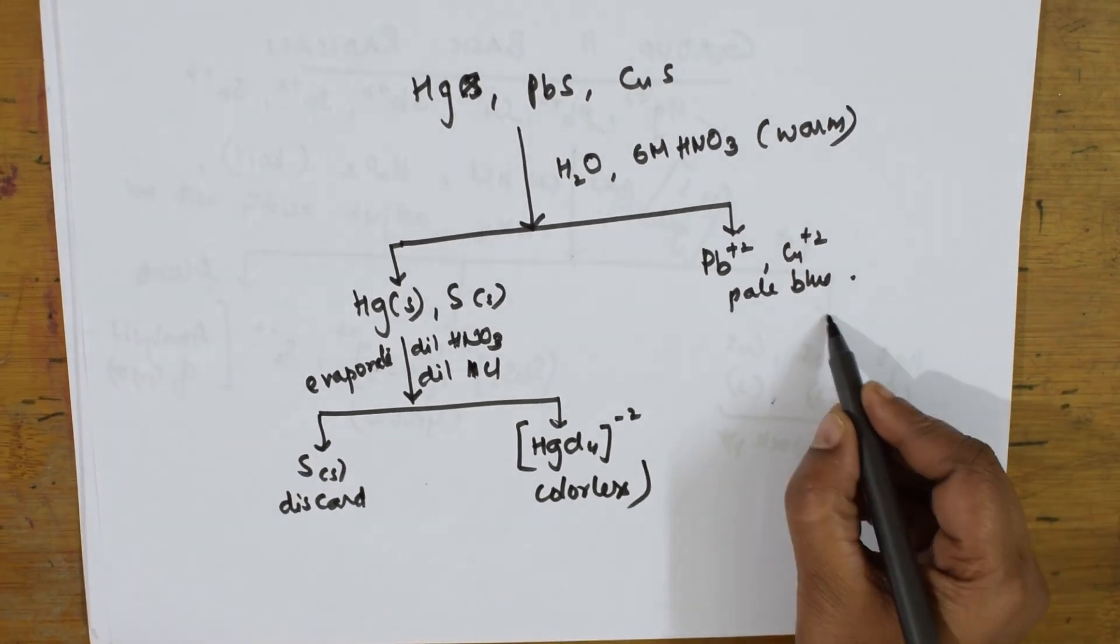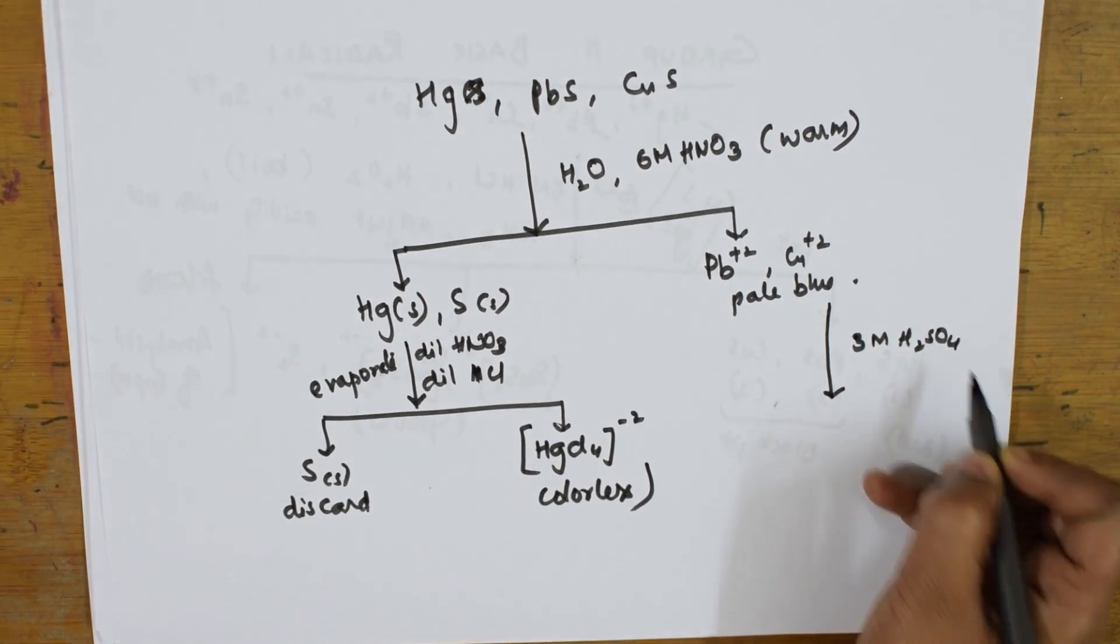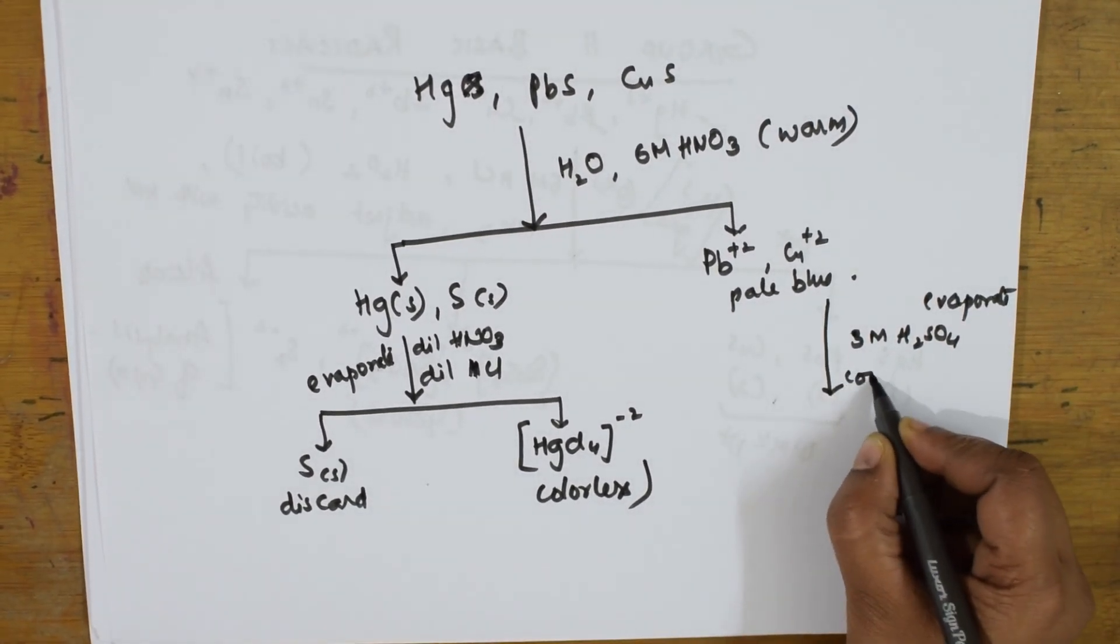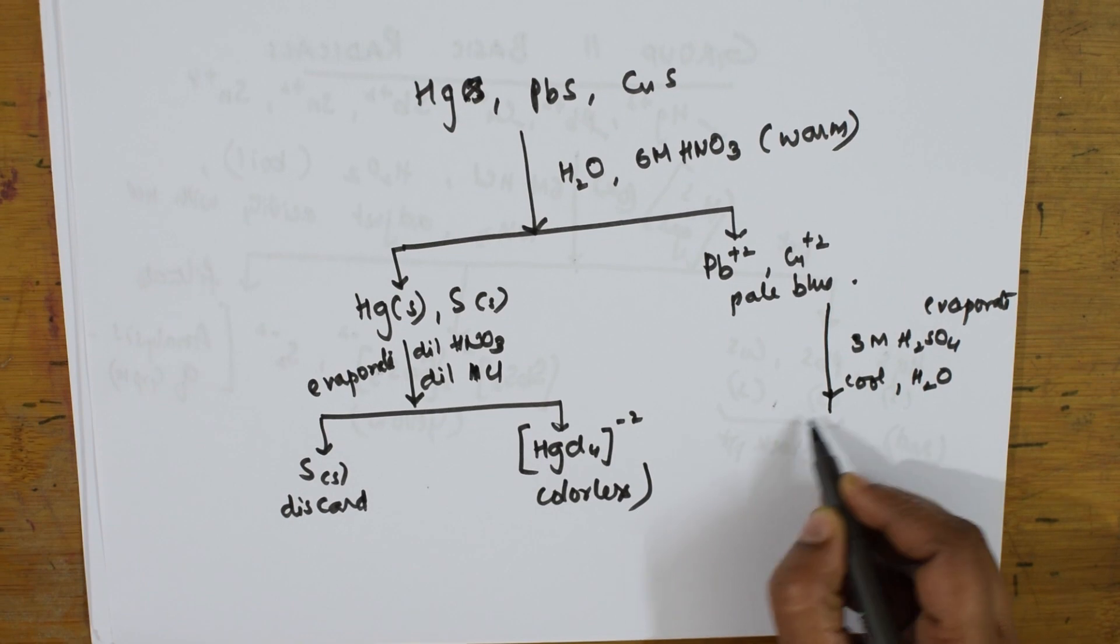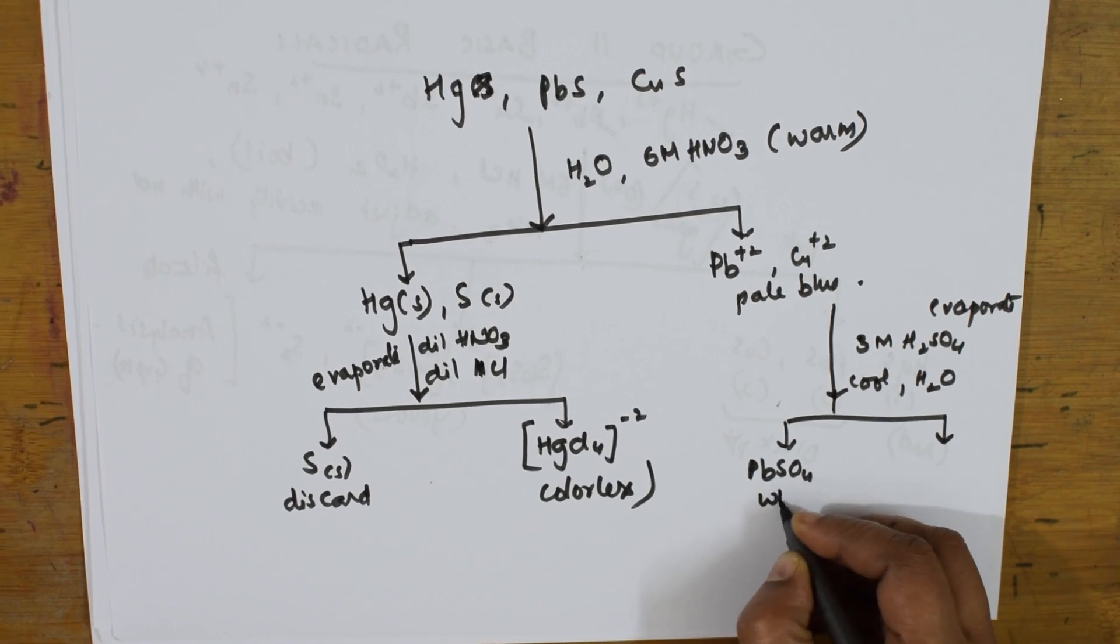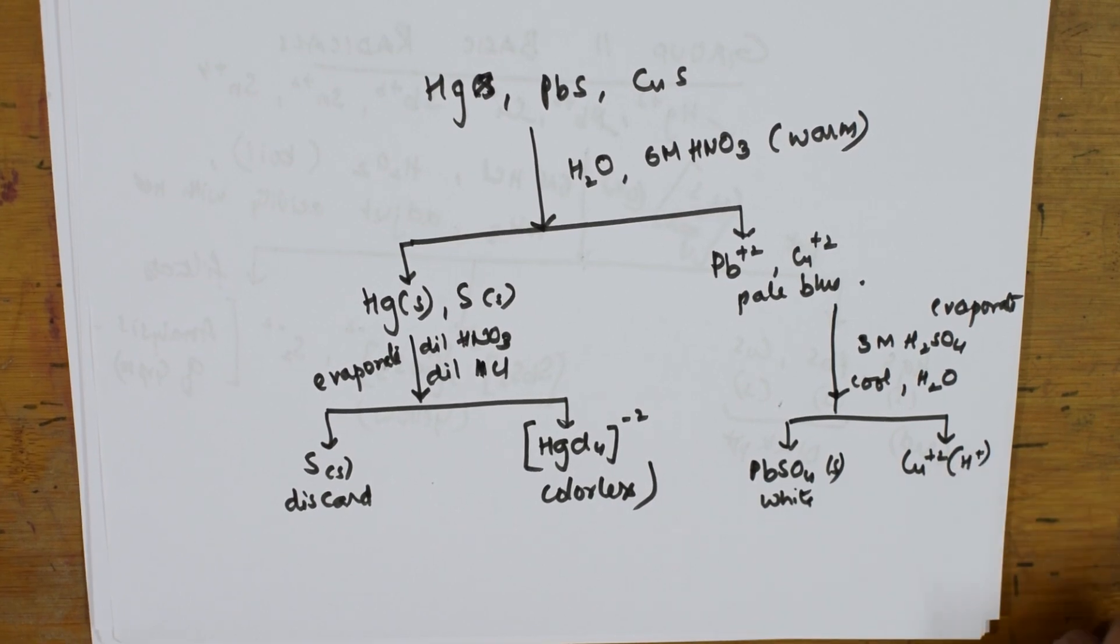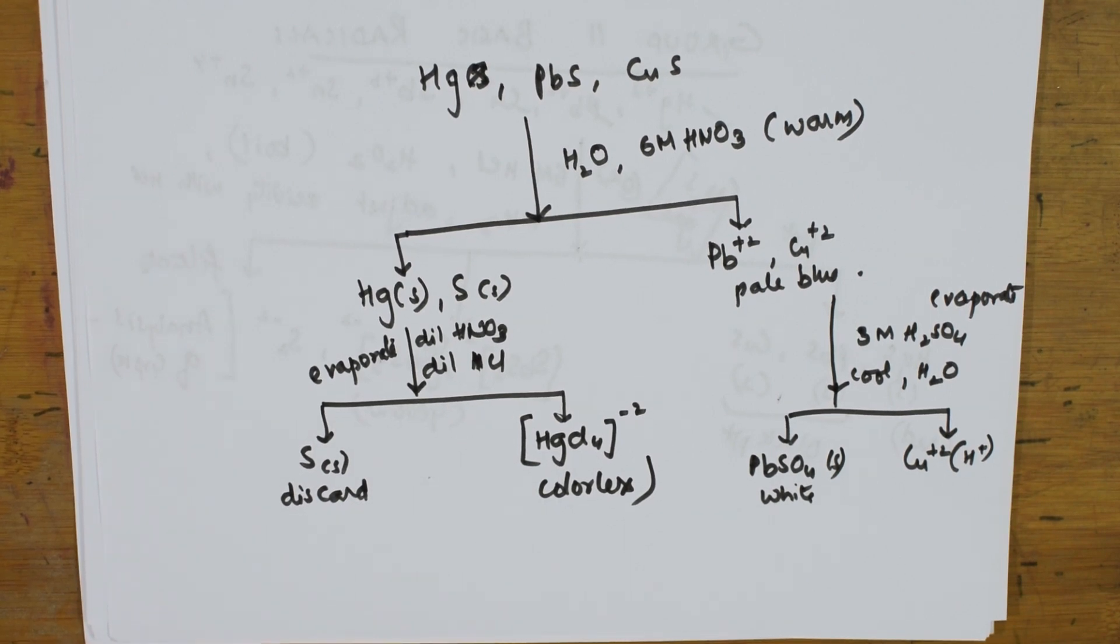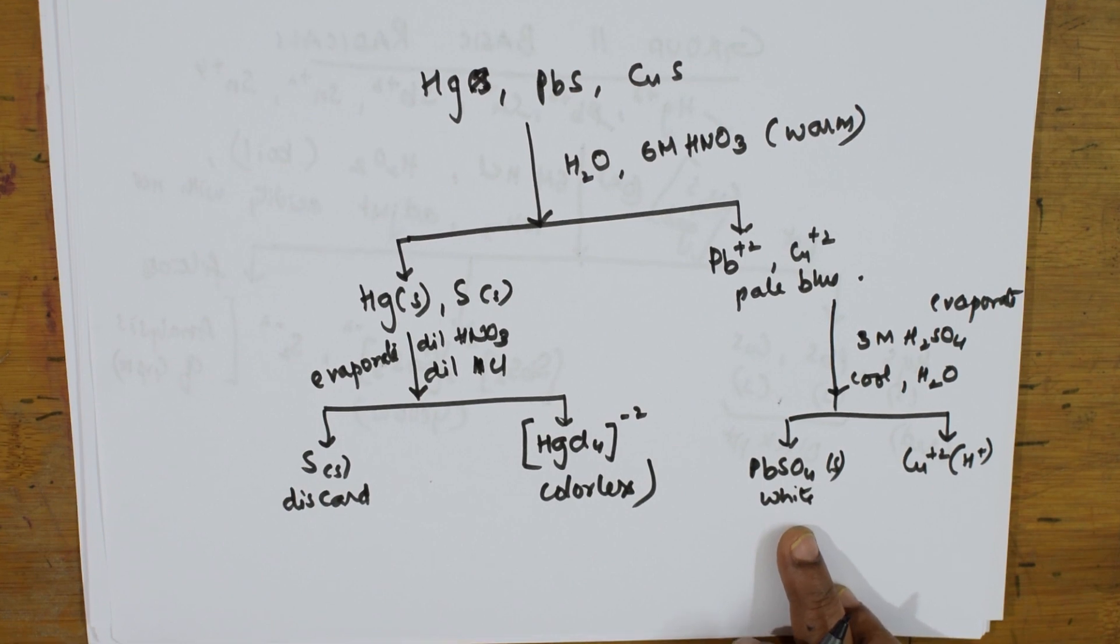Let us see this. The same thing I'm going to add 3 molar sulfuric acid, evaporate it, then you'll cool it and add water. I'll be getting, because two cations are there, I'll be getting two different analysis. One is PbSO₄ white which is a solid, next is Cu²⁺.